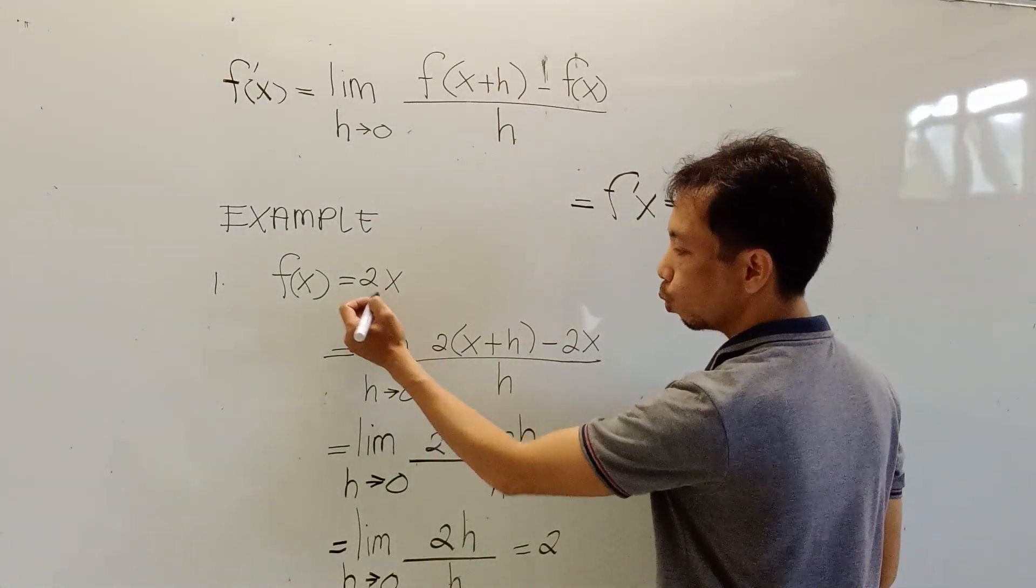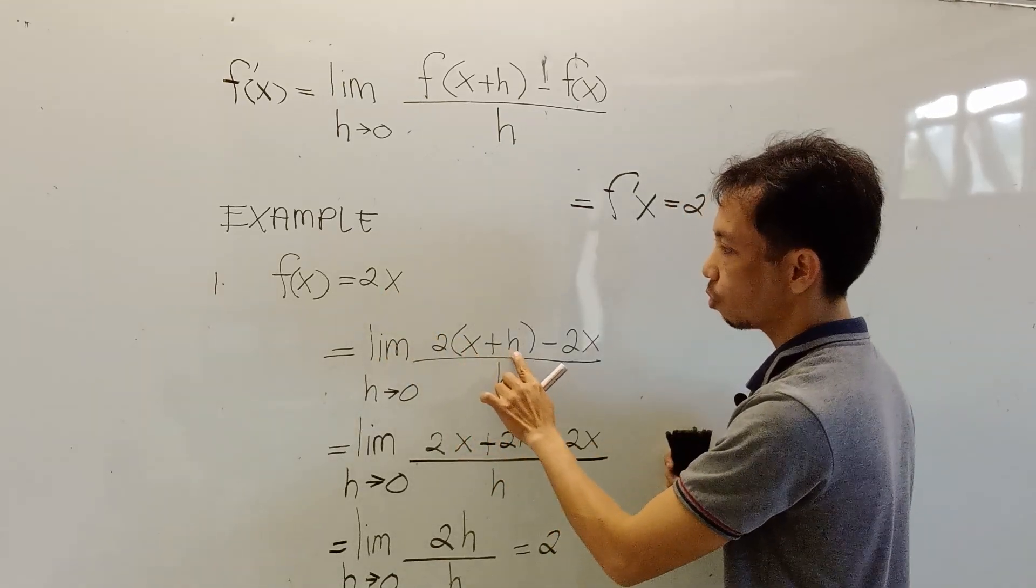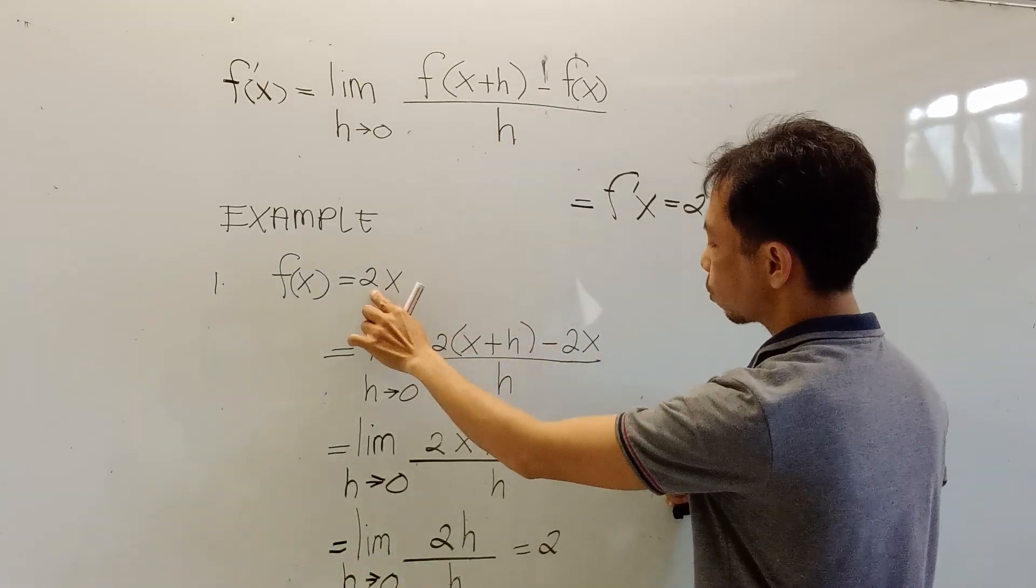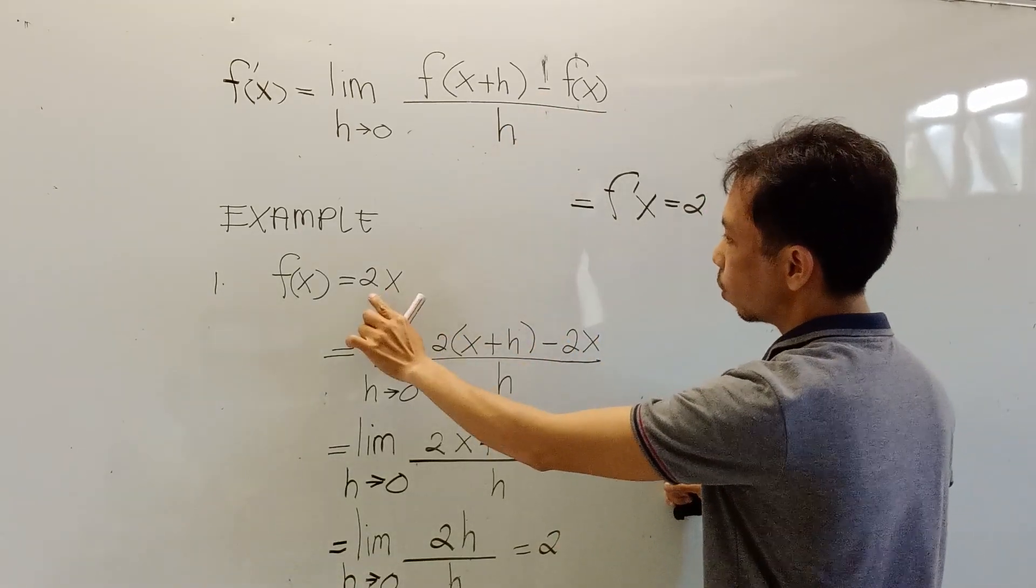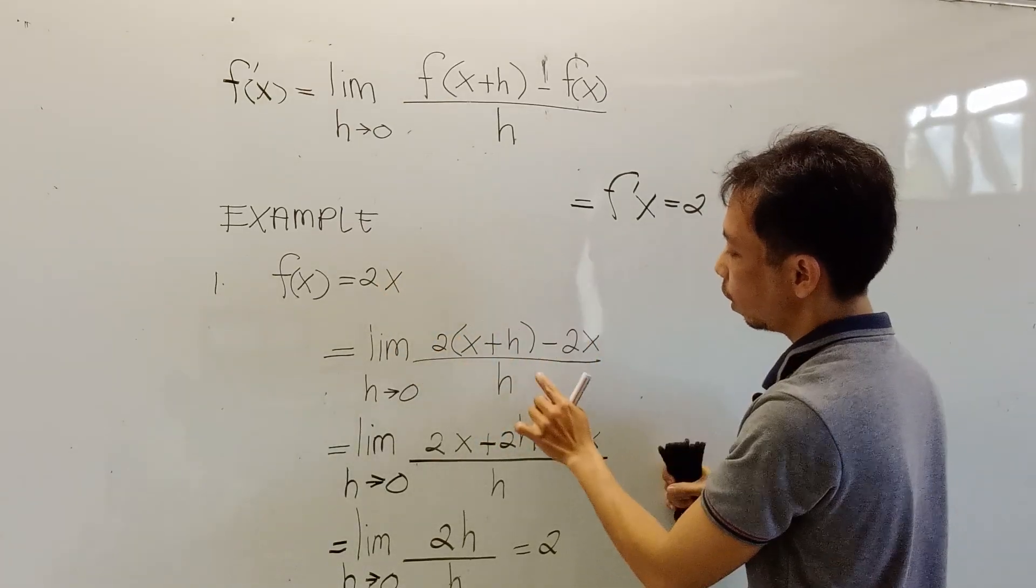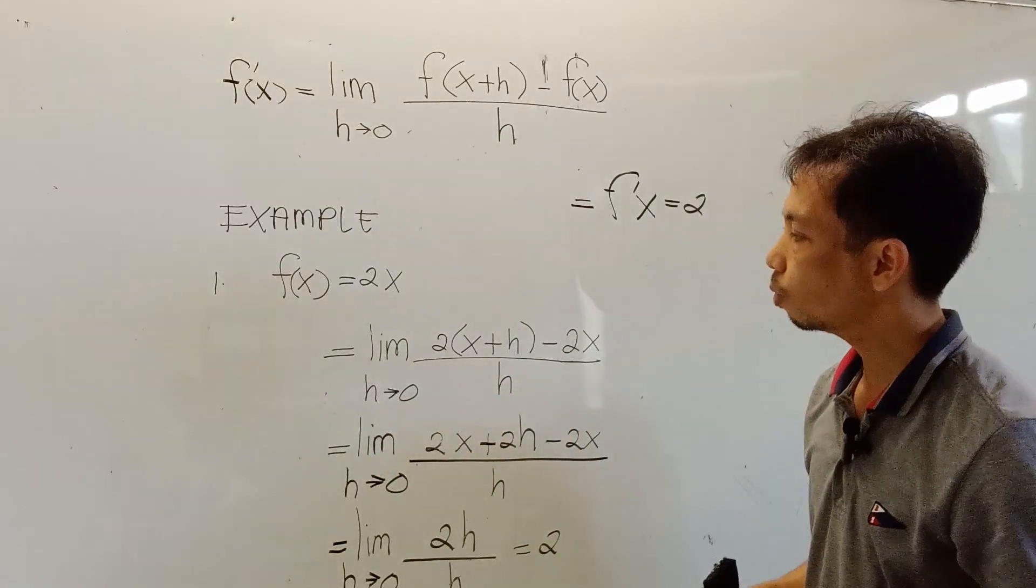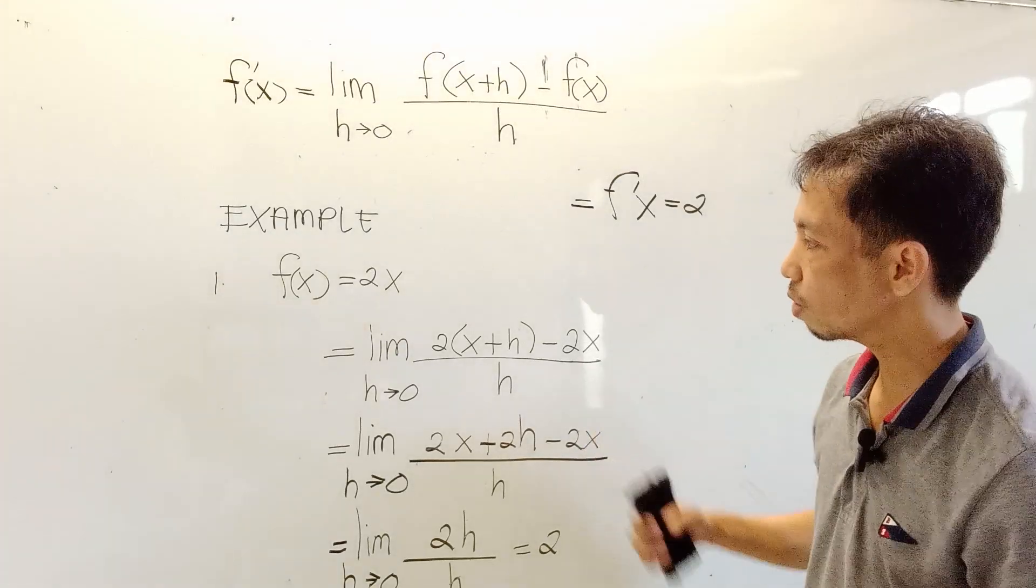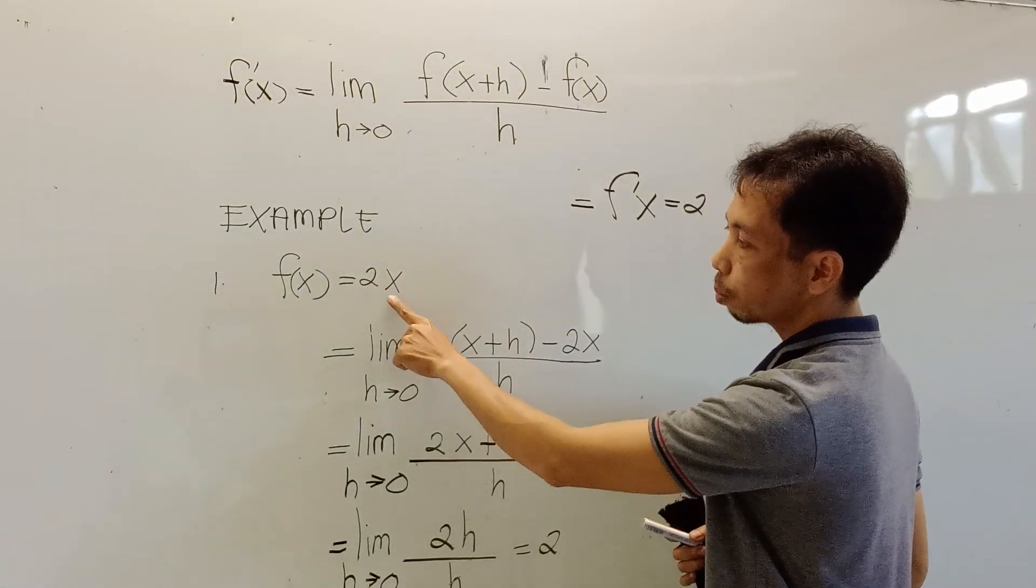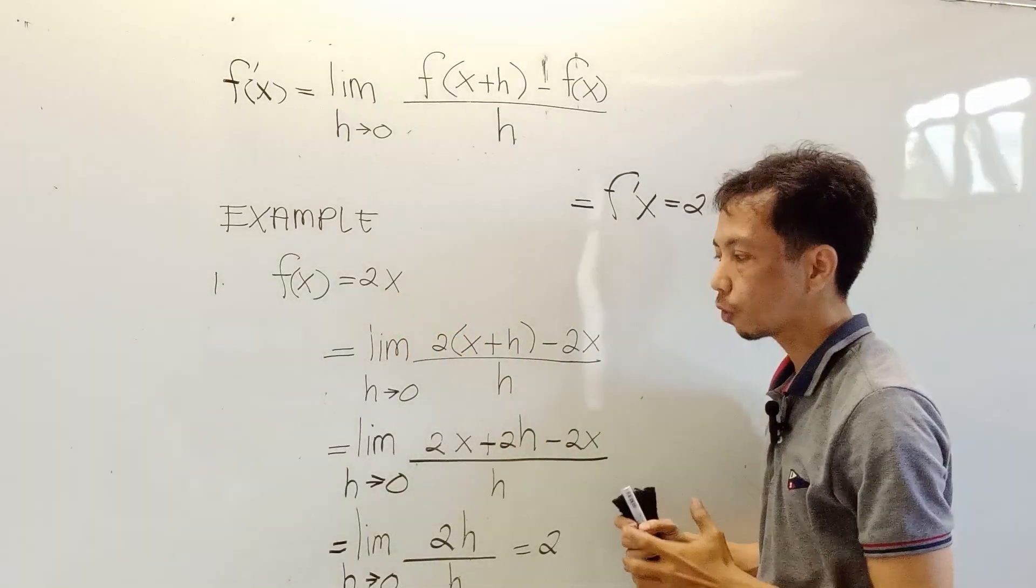Okay, we just copy the 2, then replace the x variable with x plus h. Then subtract the original function which is 2x. The f(x) is equal to 2x, that's why we put the 2x here all over h. Just copy the h here as h approaches 0. Again, I'm going to repeat the process. Just copy the numerical value here, then replace the variable with x plus h.